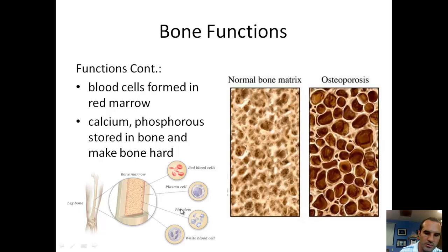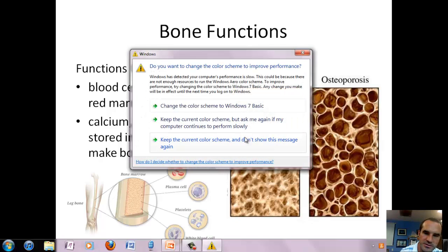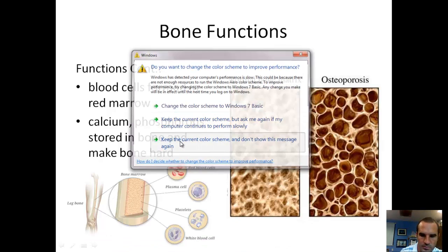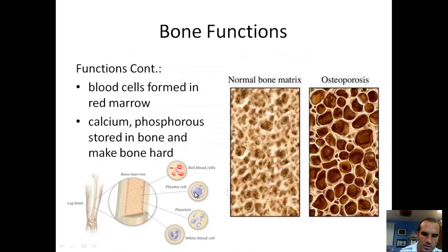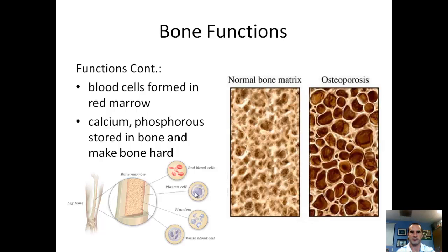In the picture you can see some of the things coming out of the red marrow in bones: red blood cells, plasma cells, platelets, and white blood cells.